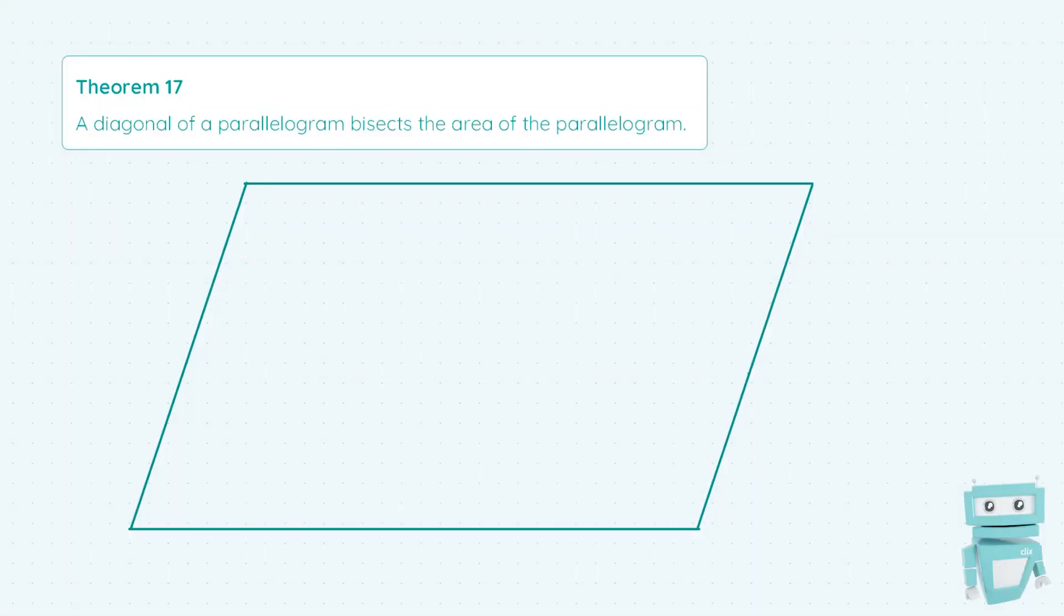So every parallelogram has two diagonals and either diagonal you choose is always going to cut the total area of the parallelogram in half. So I think it's quite an easy theorem to remember, a nice handy one.